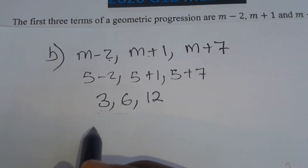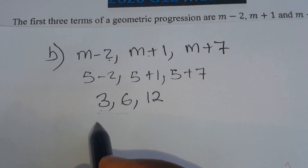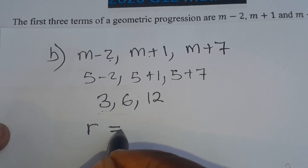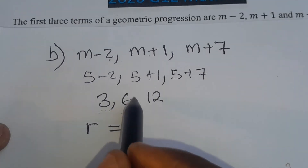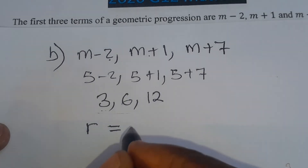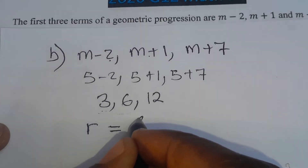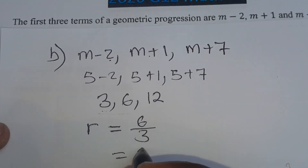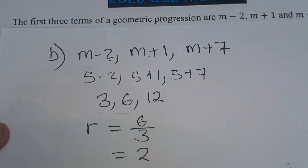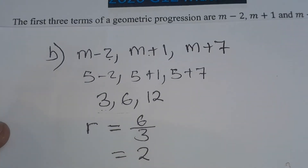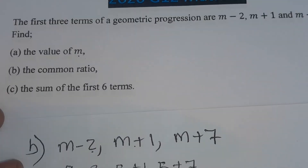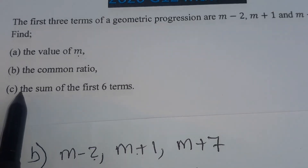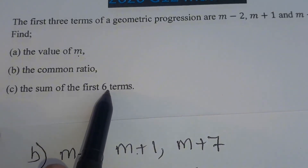To find the common ratio R, we divide the next term by the previous term: 6 over 3 gives 2. So the common ratio R is 2.